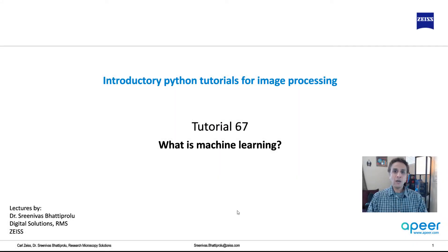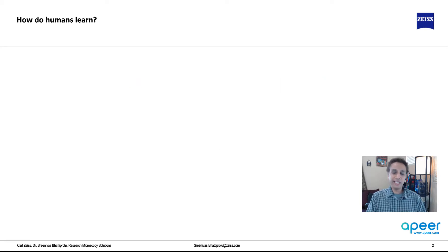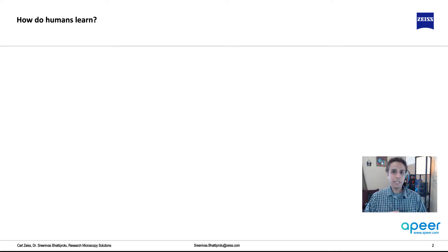Hi everyone, welcome to tutorial 67 of our introductory Python for image processing tutorial series. In the next few tutorials I plan on introducing the basic concepts of machine learning. In this tutorial let's have a quick look at what it is — a machine is learning because a human is teaching. If you hear the terms artificial intelligence and machine learning, they can be used interchangeably, but in my view machine learning is the technology you use to teach a machine, and artificial intelligence is once the machine learns and can be deployed to be artificially intelligent.